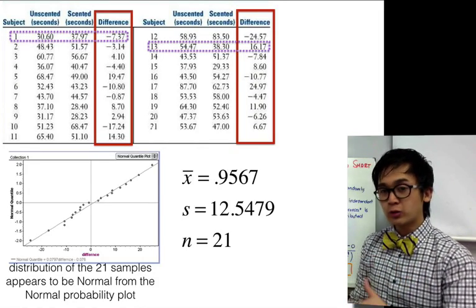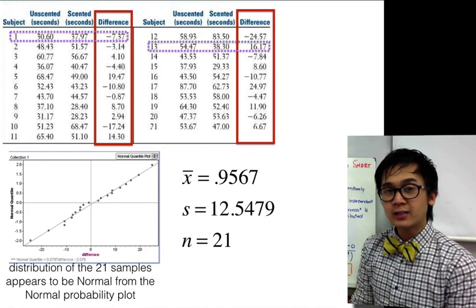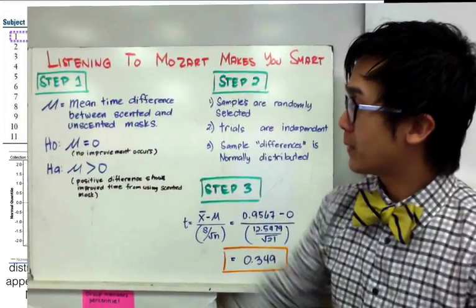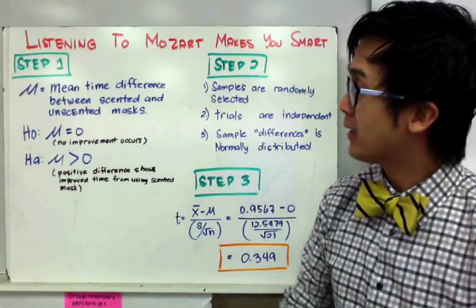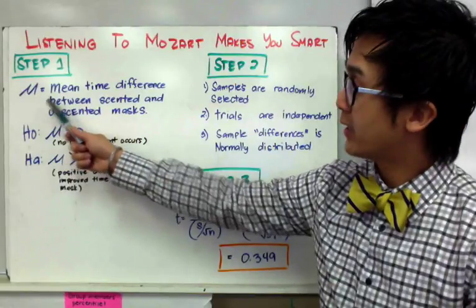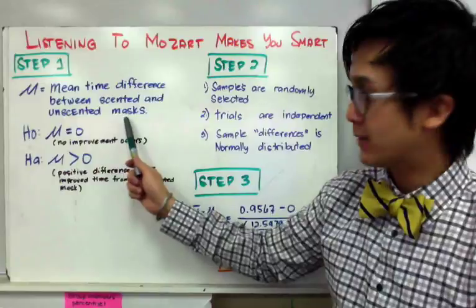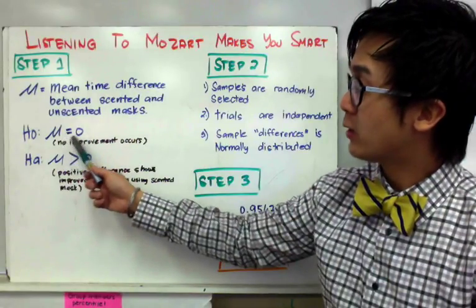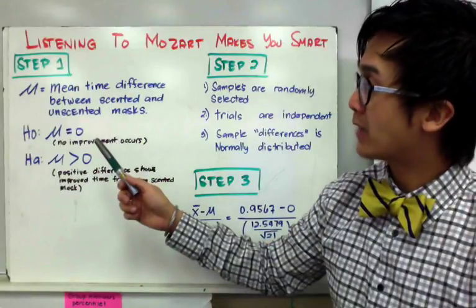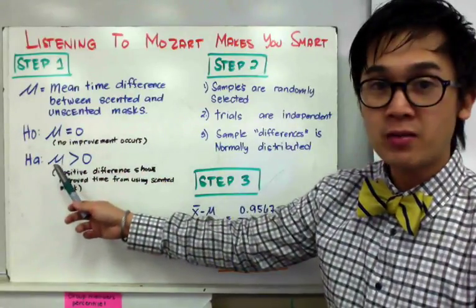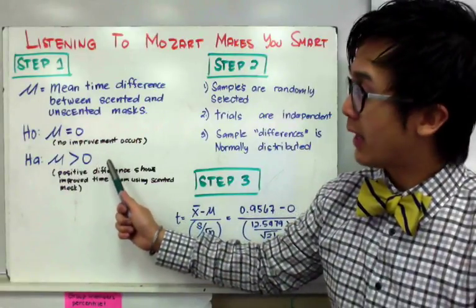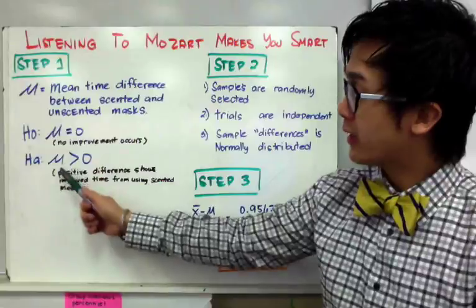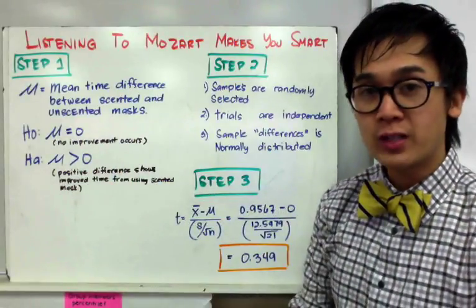Now that we've organized all the necessary information, let's conduct our hypothesis testing. For step one, we need the null and alternative hypothesis. Our parameter is μ, the mean time difference between the scented and unscented mask. For our null hypothesis, H₀: μ = 0, meaning no improvement occurs. The alternative hypothesis is Hₐ: μ > 0, meaning positive differences show improved time from using the scented mask.